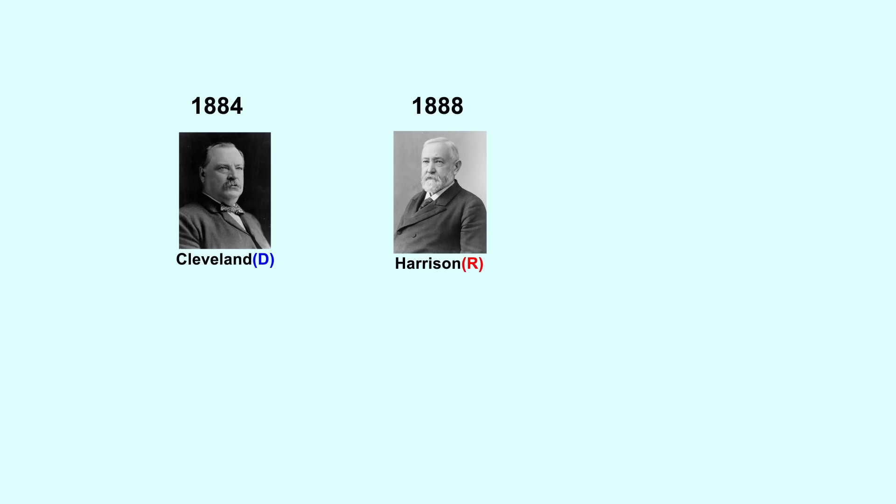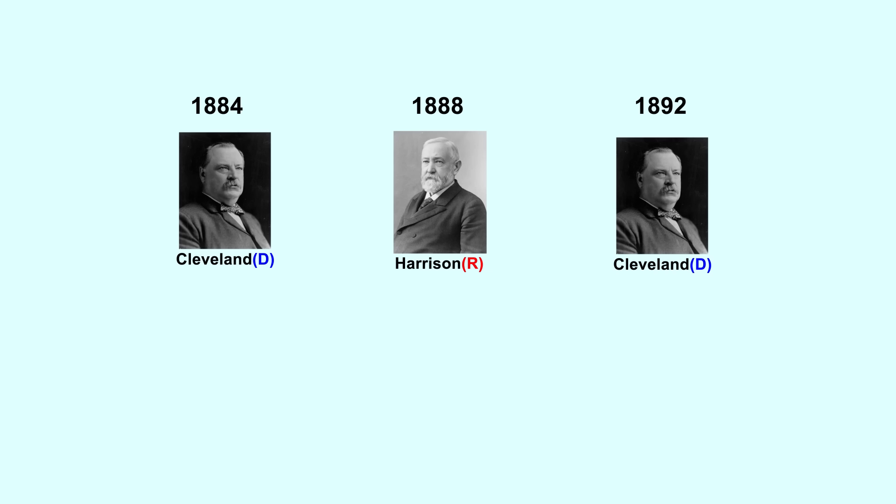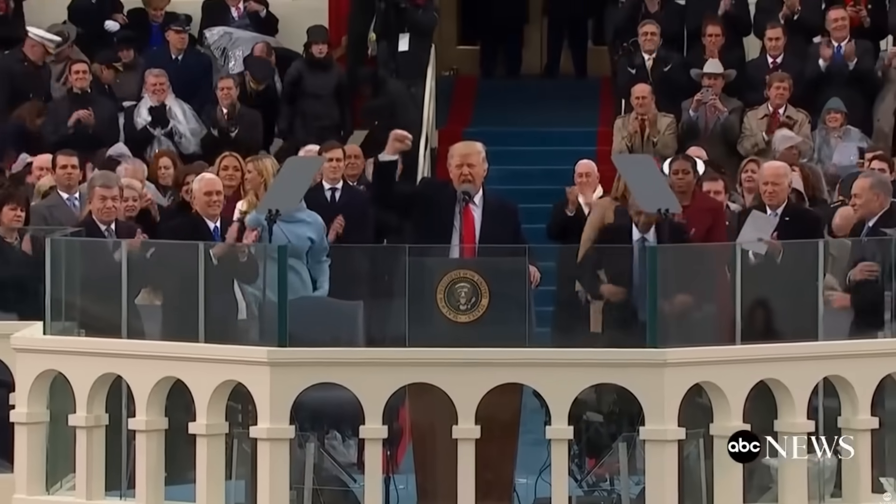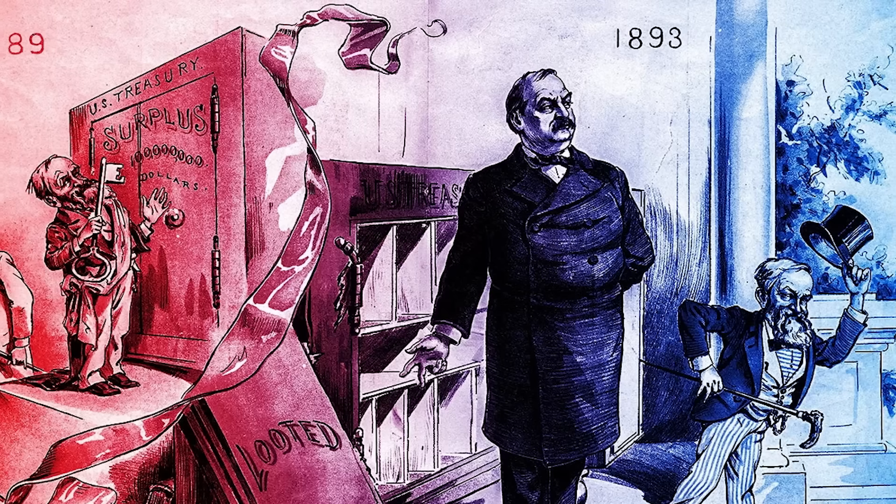Grover Cleveland had the biggest increase in negativity, but that makes sense since he didn't serve consecutive terms. He served one term as president, then lost re-election to Benjamin Harrison — even though he won the popular vote — then ran again and won in the next election. He's the only president to do this. If Trump wins this election, he will only be the second president ever to serve two non-consecutive terms. So his re-election speech was probably pretty negative because he wasn't happy with what Harrison had done with the country for the last four years.